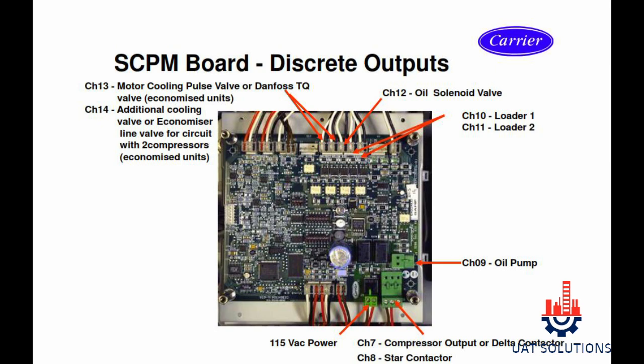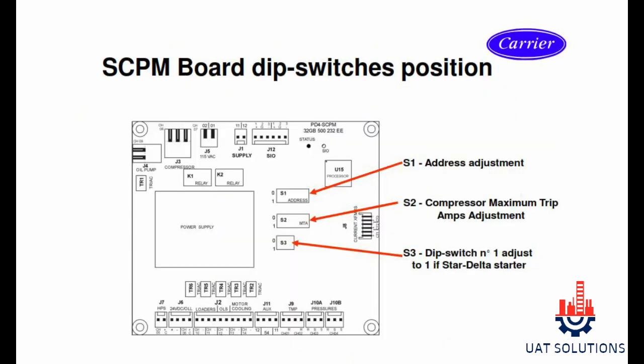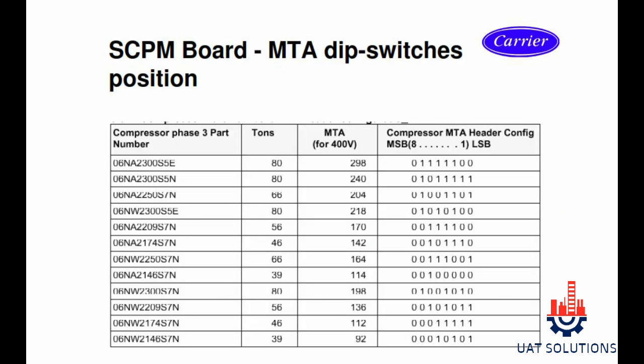The board is powered by 115 volt AC. DIP switches and their function on the TCPM board: S1 switch is used for addressing of the TCPM board, S2 is used for compressor maximum trip ampere setting, and S3 is used for compressor starter type selection. The positions of DIP switch S2 are shown, which is used to set the compressor must-trip ampere. In the table, MTA values and switch positions are shown as per the compressor models.